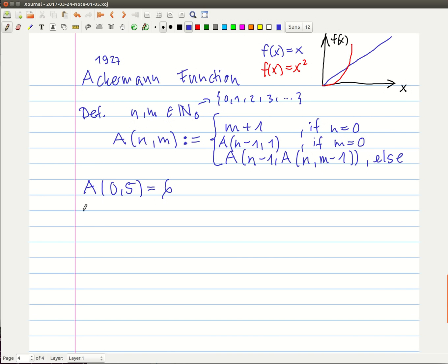Let's try something more tricky, like Ackermann of, let's not make it too complicated, one comma two. This is equal to, well, okay, our n is equal to one and our m is equal to two. So these two cases don't hold. So we have to deal with this body over here.